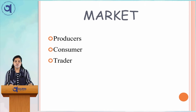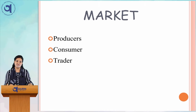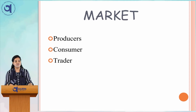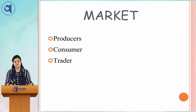Those who are engaged in the production of goods and services to be sold in the market are known as producers. Those who buy the products, goods, or services for their own use are known as consumers. Traders are those people who act as a link between the producer and consumers.